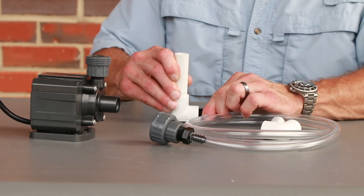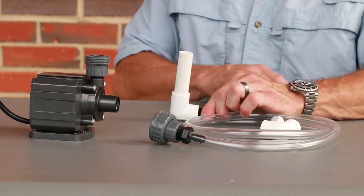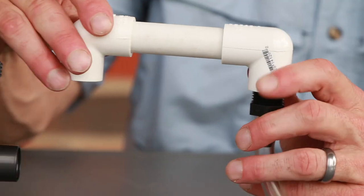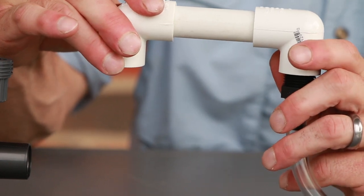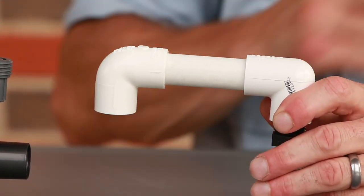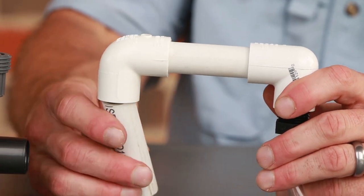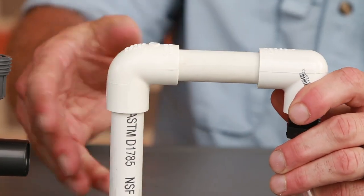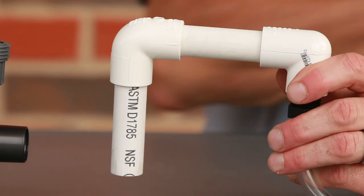Push a three inch piece of half inch diameter pipe into the slip side of the elbow. Push another 90 degree slip elbow on the other end of the three inch pipe and turn it downward. Add another three inch piece of half inch pipe and a third 90 degree elbow turned outward.